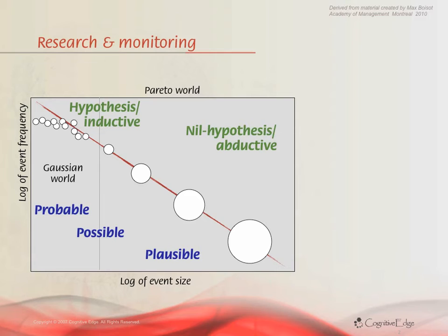It's sometimes known as the logic of hunches — that ability of human beings, individually and collectively, to sense or see a connection before it's available through conventional scanning methods.